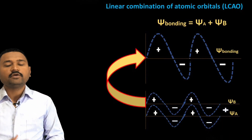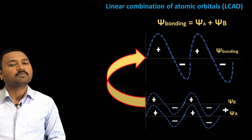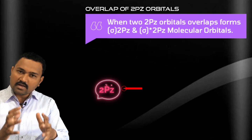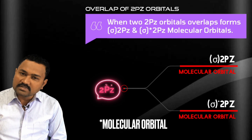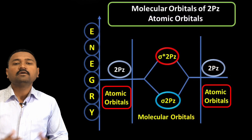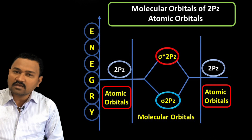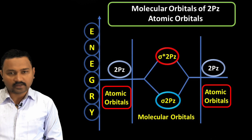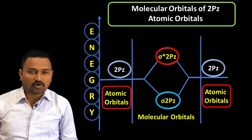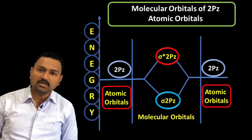When two electron wave functions of 2pz atomic orbitals approach along the internuclear axis, they overlap by addition and subtraction of these wave functions, resulting in the formation of sigma 2pz and sigma star 2pz molecular orbitals. The sigma 2pz is a bonding molecular orbital and sigma star 2pz is the antibonding molecular orbital. Sigma 2pz has lower energy while sigma star 2pz has higher energy. This overlapping is shown in the diagrammatic representation along with their energy levels.